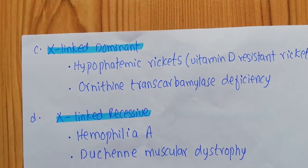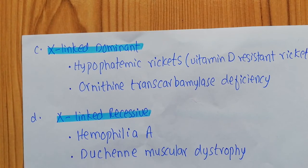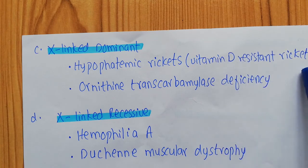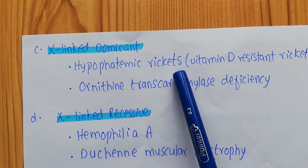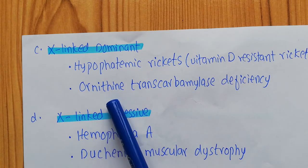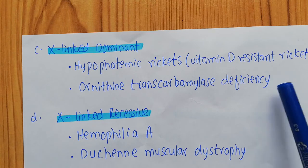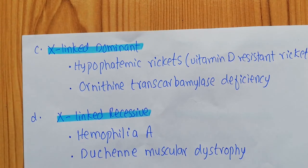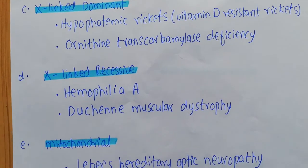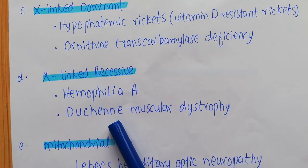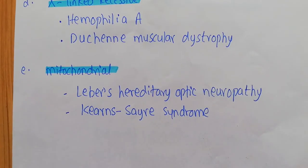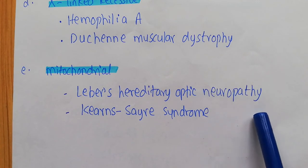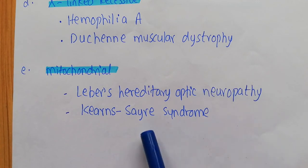For X-linked dominant diseases, important examples include vitamin D-resistant rickets, also known as hypophosphatemic rickets, and Ornithine transcarbamylase deficiency. For X-linked recessive diseases, important examples include Haemophilia A and Duchenne muscular dystrophy. Examples of mitochondrial diseases include Leber's Hereditary Optic Neuropathy and Kearns-Sayre syndrome.